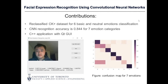The first contribution is modifying the CK+ dataset for 7 facial expression recognition. The convolutional neural network model trained on this new dataset achieved satisfactory accuracy on the original test dataset. The confusion matrix for the result is shown on the right. In addition, a C++ application with a graphical user interface recognizes facial expressions in real-time.